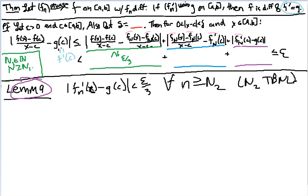And here's the proof. Since f prime of n goes to g, at this point I don't care if it's pointwise or not because I only care about what happens at this point c.